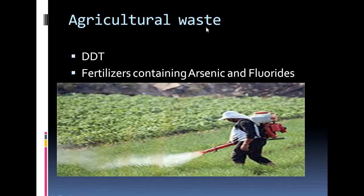Agricultural waste also causes water contamination, especially the pesticide DDT. DDT is banned in the USA but is still used in India. This pesticide also causes biomagnification. If water contaminated with DDT is consumed, the person will suffer from different types of hormonal imbalance and it may also lead to cancer.